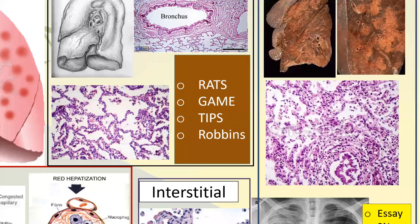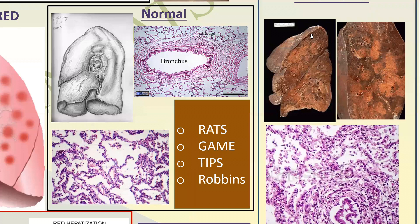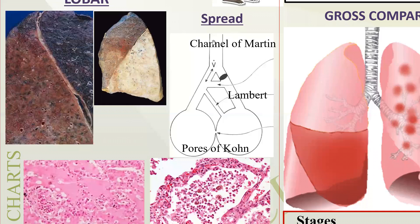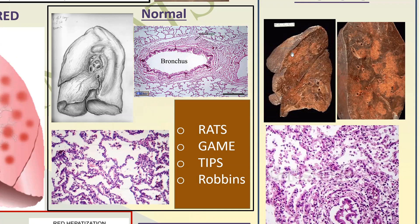The next one shall be Bronchopneumonia. Compared with lobar pneumonia, here I find irregular patchy map-like areas of pale brown color — these are areas of consolidation. At higher magnification you see multiple irregular patchy areas of consolidation, sometimes becoming confluent — joining together. This is typical of bronchopneumonia. In between the patchy areas you find normal lung parenchyma. Compare: in lobar pneumonia the total lobe is involved, whereas in bronchopneumonia it is patchy with intervening normal parenchyma.